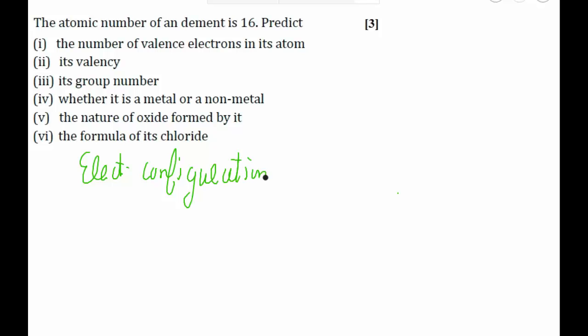So electronic configuration: the first shell is the K shell and we know that the maximum number of electrons that the first shell can have is 2. Similarly, the second shell can have a maximum number of 8 electrons. So 8 plus 2 equals 10. Total I have 16 electrons, so 16 minus 10 is 6. So 6 electrons are left which will go in the third shell. So the electronic configuration is 2 comma 8 comma 6.